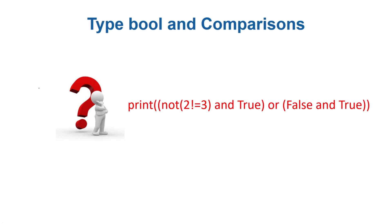I left you with a question in the last video. The question was: what is the result of not(2 != 3) and true or false and true? Your answer is either true or false because these are all comparisons and combinations of boolean values. Let's go step by step: 2 != 3 — is that true? Yes, 2 is not equal to 3, so that's true.